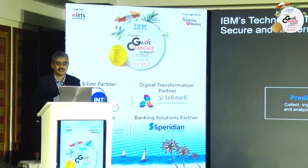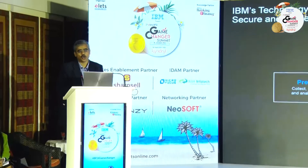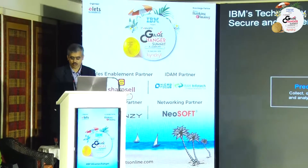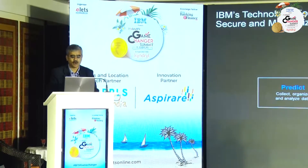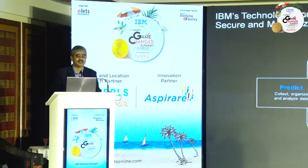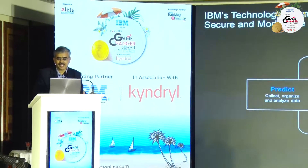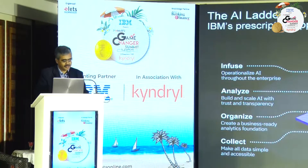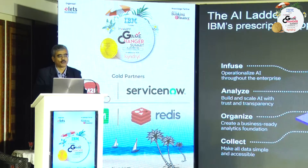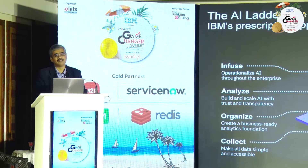Now let's get on to the next step in terms of laying the technology foundation. IBM's approach to this has been around four pillars: predict, automate, modernize, and secure. We'll cover each of these in terms of how we've been working with our enterprise clients through this whole journey. On the predict pillar, which is the data and AI pillar, the approach we've taken with some of our large enterprise clients is a cloud-native modular approach.